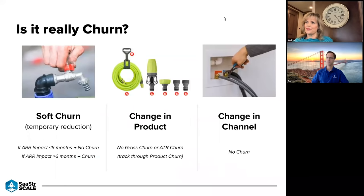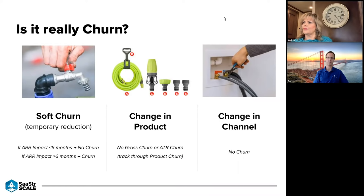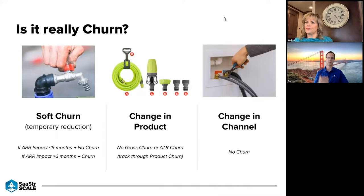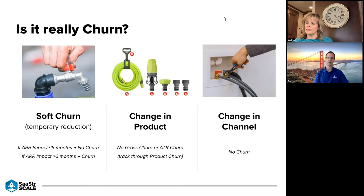Now, some examples around 'is this really churn?' The first is a temporary reduction, or soft churn. How we typically look at it: if there's a temporary reduction for a short period — say within a six-month window — and at the end of that period the customer is effectively renewing the full amount and getting back to whole, then we wouldn't typically take churn. If it's longer than that, we would take churn, and if the value goes back up we'd classify it as a win-back.